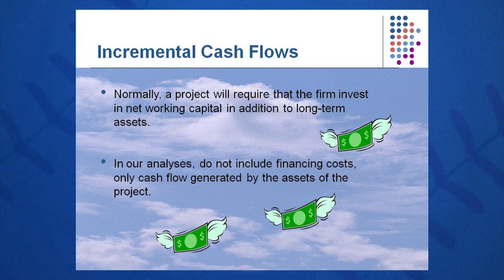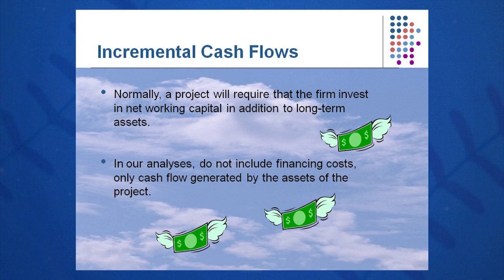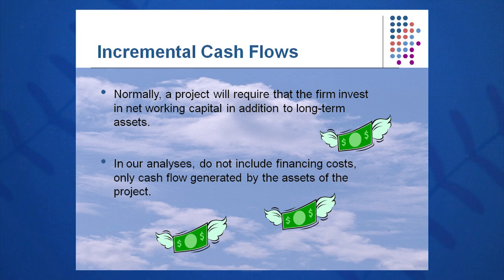Generally, working capital is negative — a large negative amount — for things like inventory. We'll have some things tied up in accounts receivable, possibly some small prepaid assets, and then we'll have some current liabilities going out to factor into the net working capital.